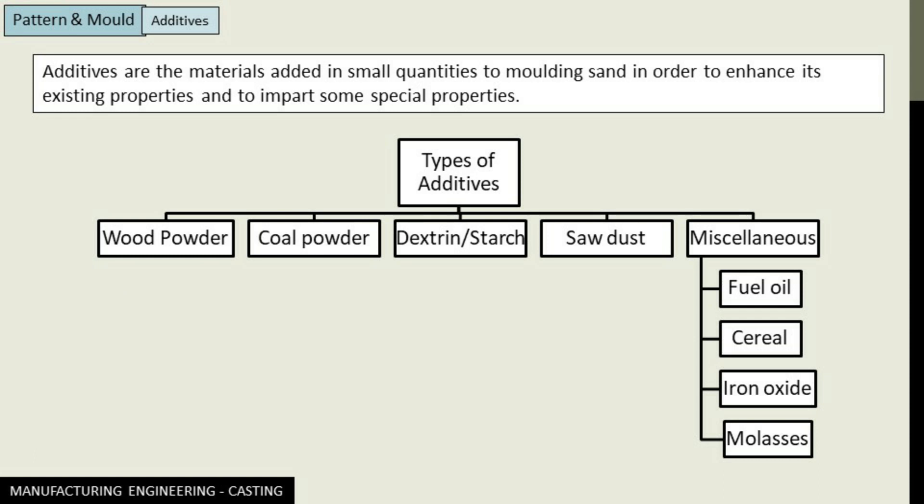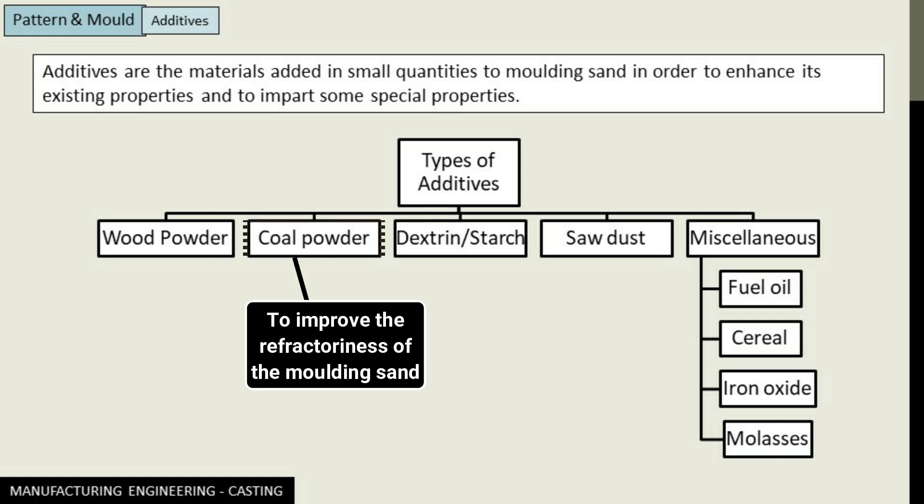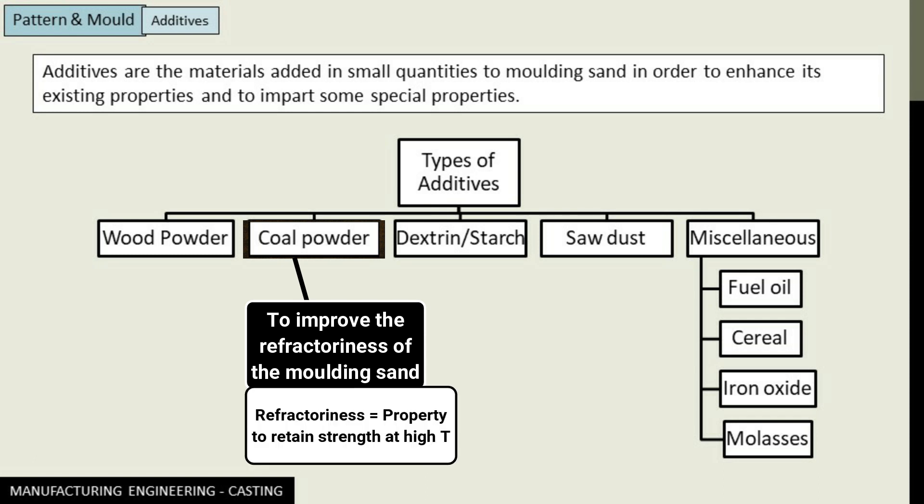Next we have coal powder. Coal powder as an additive improves the refractoriness of the molding sand. Refractoriness is the property of retaining strength at extremely high temperatures, because we are going to pour molten metal into the mold. If the mold material is unable to retain its strength during such severe conditions, the whole setup will collapse.